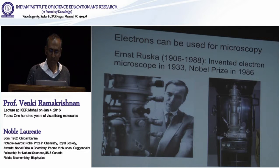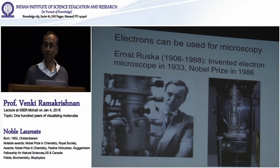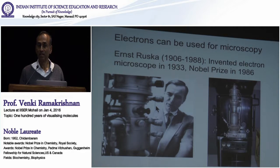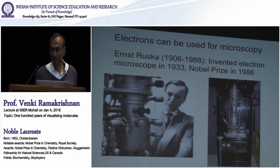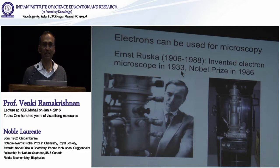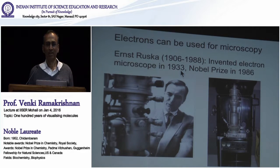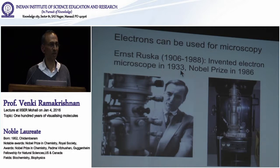Soon afterwards it was verified that electrons are waves. But it was not until much later that Ernst Ruska and his colleagues invented the electron microscope, where they would use the wave properties of electrons to actually magnify things to very, very high magnification. He invented it in 1933, but the Nazis were in power in 1933, and soon after that World War II broke out.